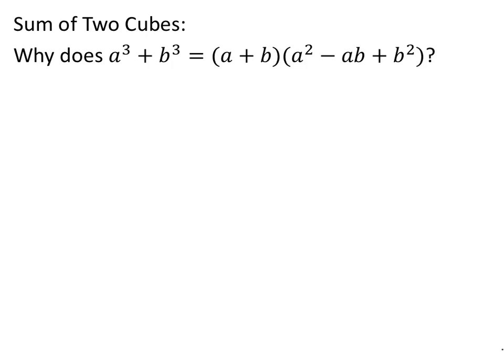And a and b can represent different things. They can represent strictly variables, sometimes just numbers, sometimes numbers and variables. So it's important to keep that in mind as we work this through. Usually you are working with variables if you're looking at factoring it out this way. So we're going to find out why a cubed plus b cubed equals a quantity a plus b times quantity a squared minus ab plus b squared.